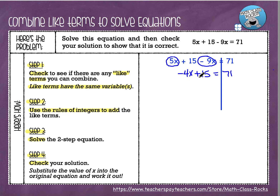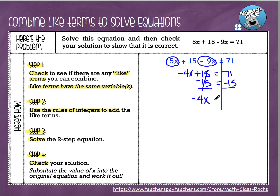Alright, a two-stepper. I've got a negative 4 to cancel and a positive 15. I know that I'm going to start with the adding or subtracting — it's the number that's farthest away from the variable that we want to cancel first. So I'm going to subtract 15 from each side. These 15s are going to cancel — positive 15 minus 15 cancels. I'm going to be left with a negative 4x on the left side, and on the right side when I do 71 minus 15, I'm going to get 56.